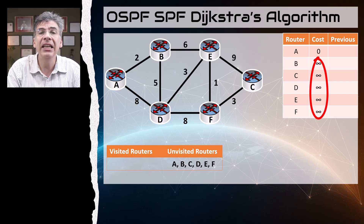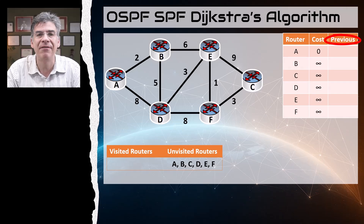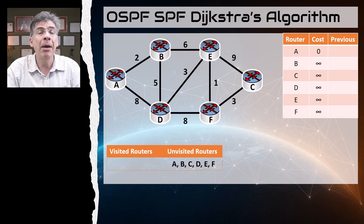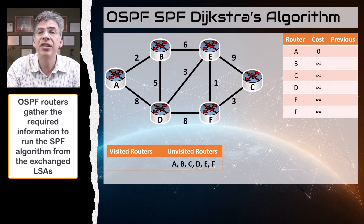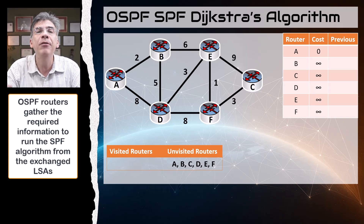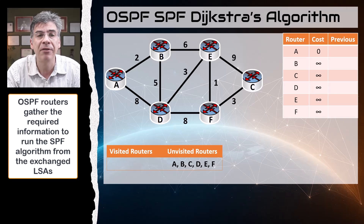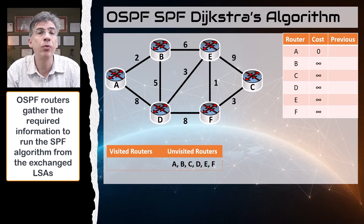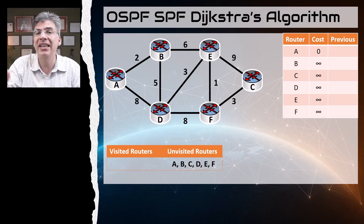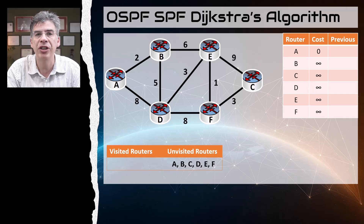We have one more column in this table that indicates the previous router — the router via which we reached that specific router. The routers in this topology are able to go through this algorithm because of the information they collect from all of the LSAs they receive from their neighbors. LSAs contain prefix information as well as topology information — meaning information about the links and the costs of those links. From that received information, each router can build this table internally and thus build the OSPF topology.